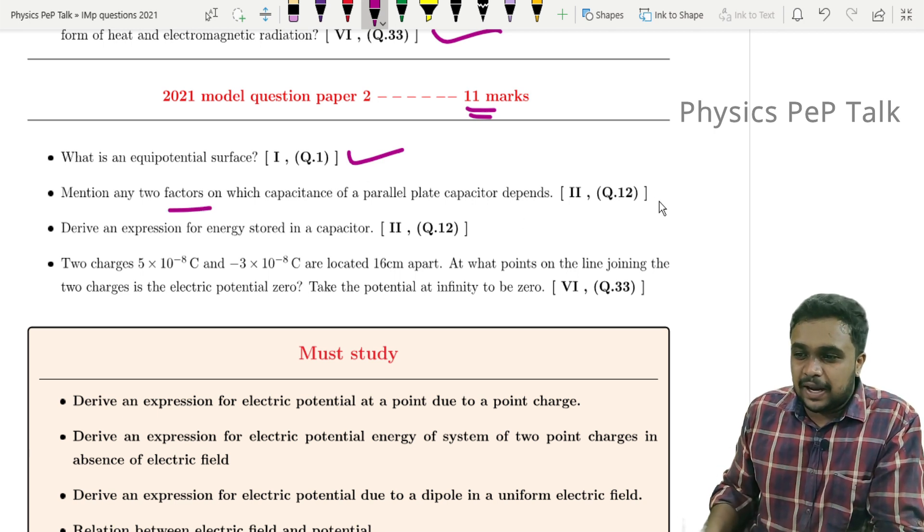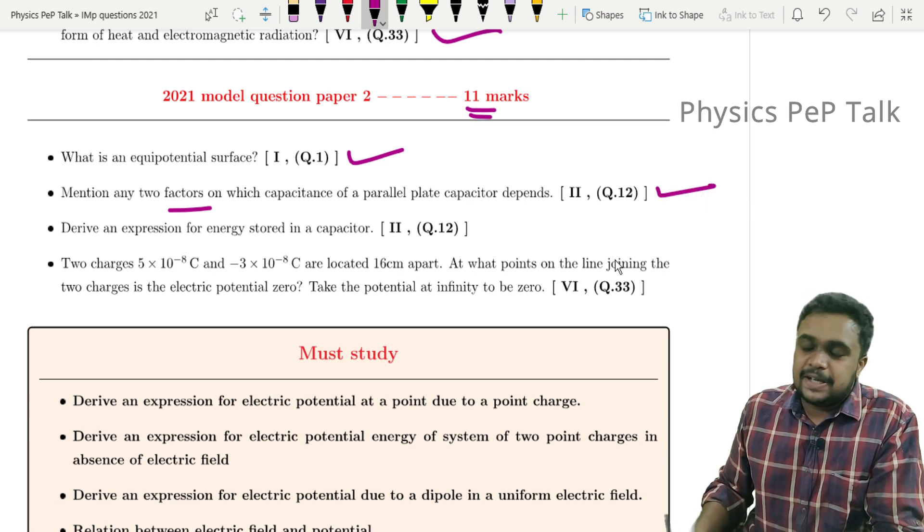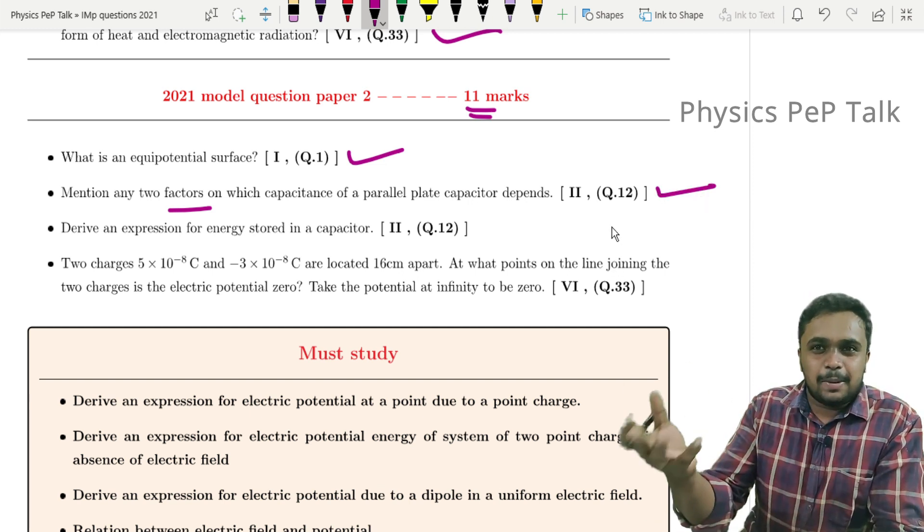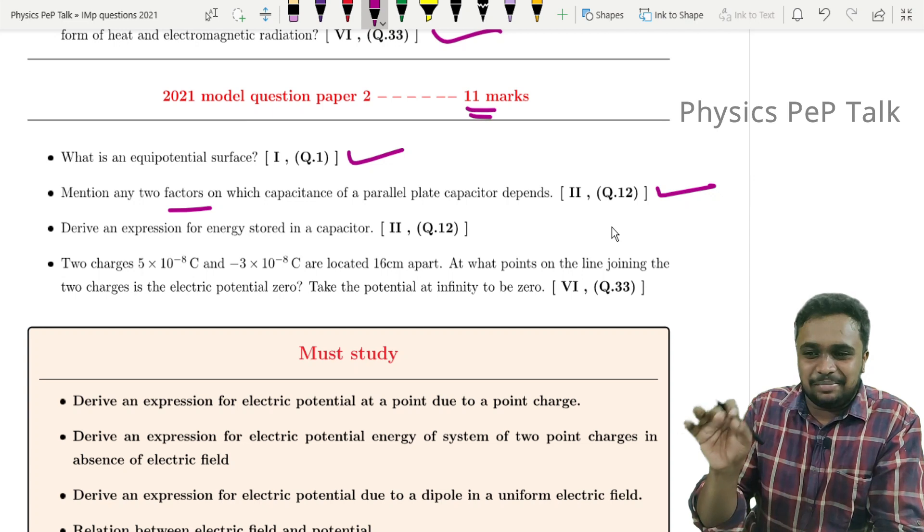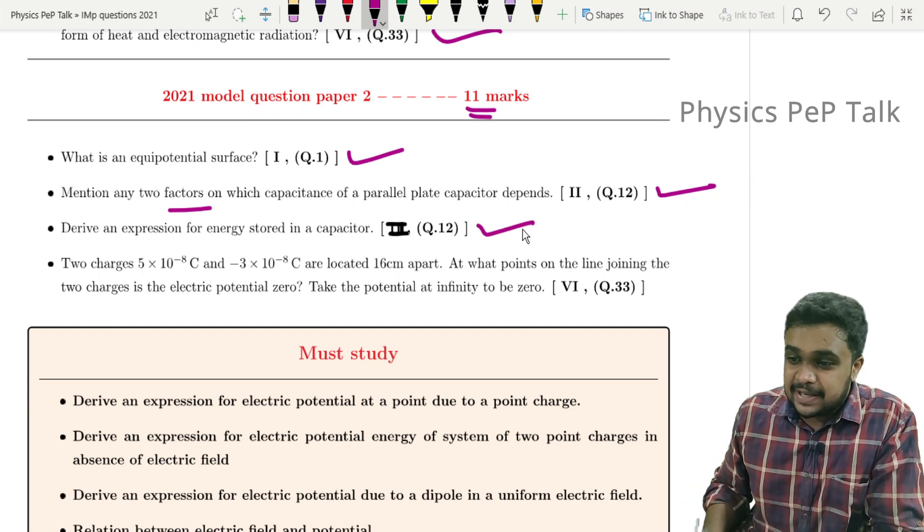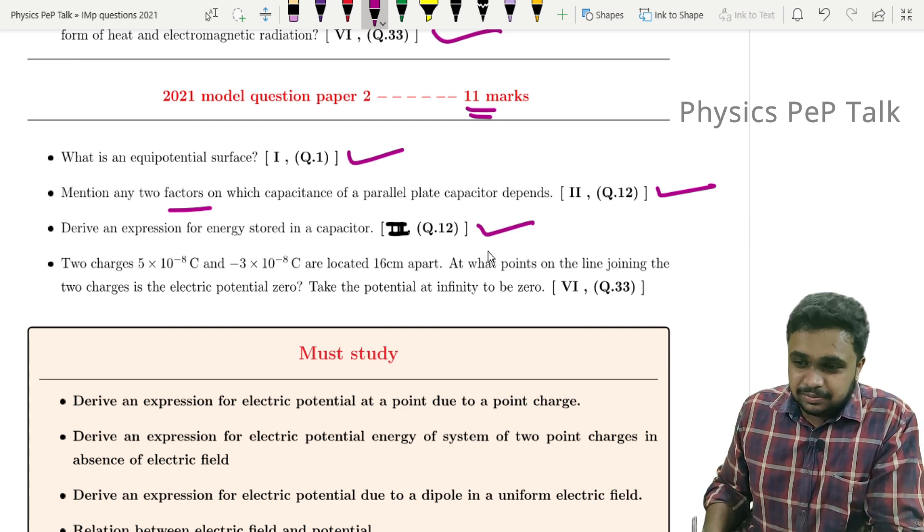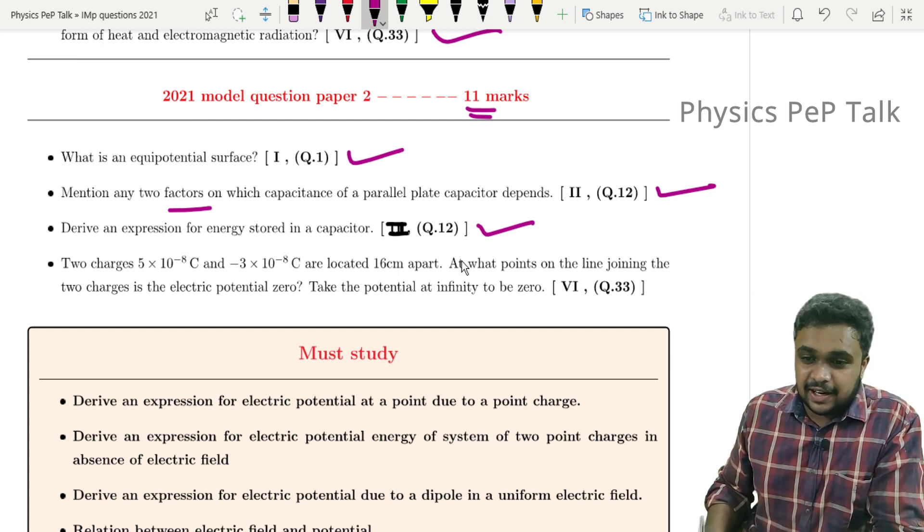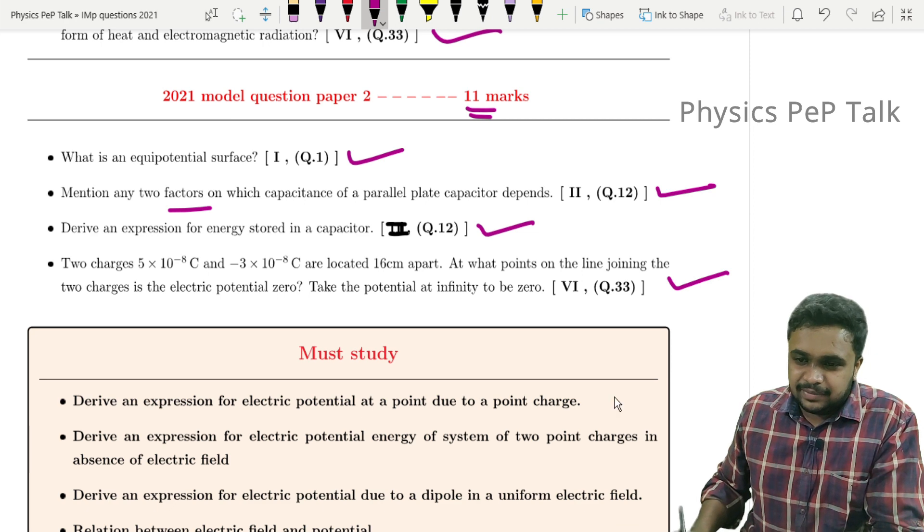Mention any two factors on which parallel plate capacitor depends upon - this was in the previous model paper also, so it's very important. Derive an expression for energy stored in a capacitor. This is a three mark question - the derivation and formula are both important.